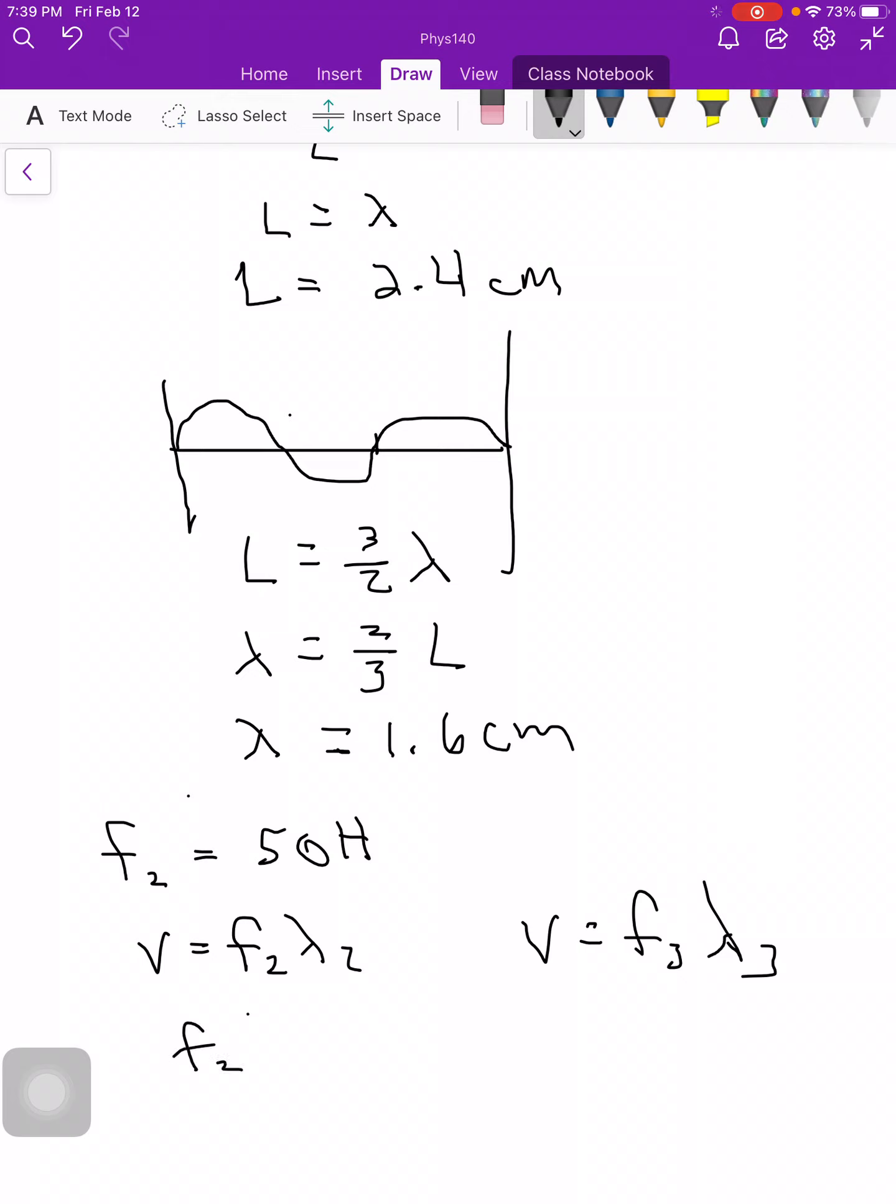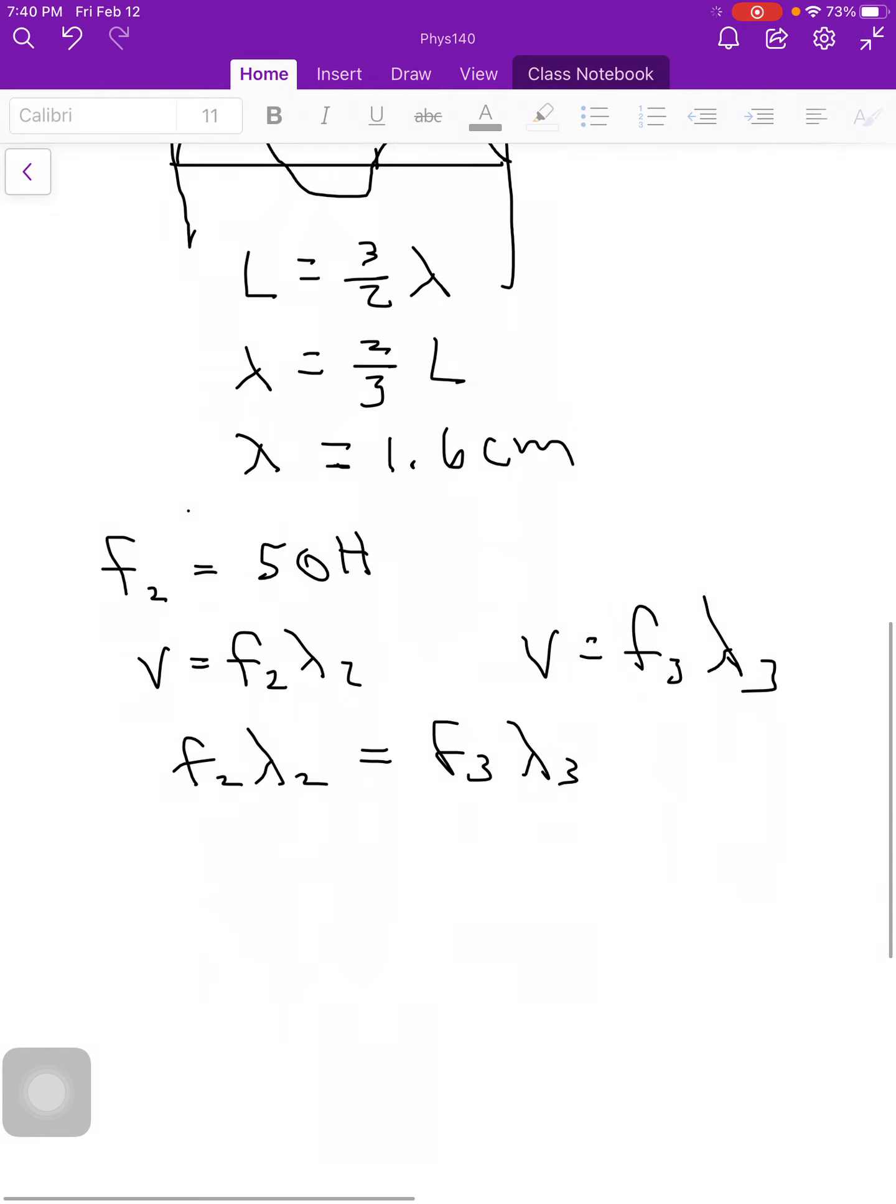So we can relate these equations together. So we're going to say f2 lambda 2 is equal to f3 lambda 3. And so now I'm going to use, I mean you could use if you wanted to the actual values, but I'm just going to use the equations. I don't need to use the value. So I'm going to say f2 times L is equal to f3 times 2 thirds L.